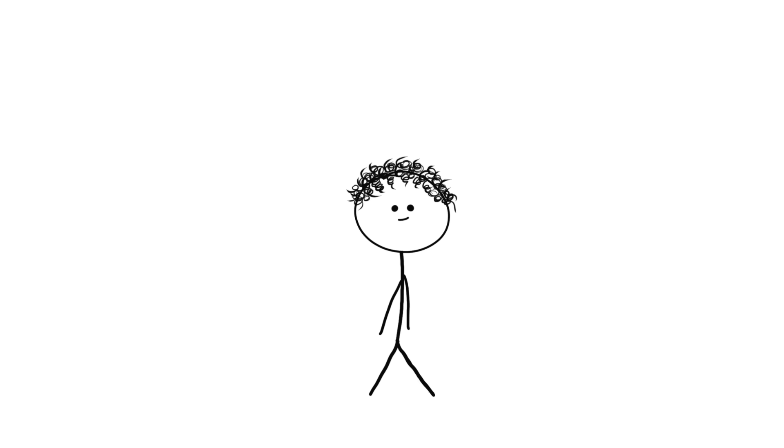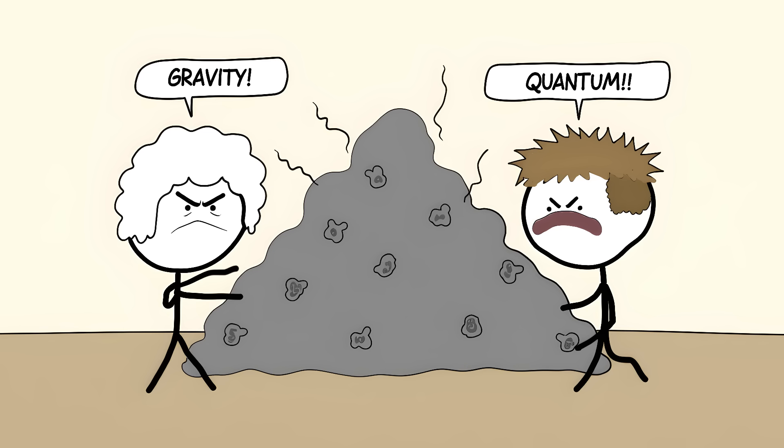This created what scientists call the information paradox. And it's basically the physics equivalent of dividing by zero. This discovery means either our understanding of gravity is wrong, or quantum mechanics is wrong, or both.